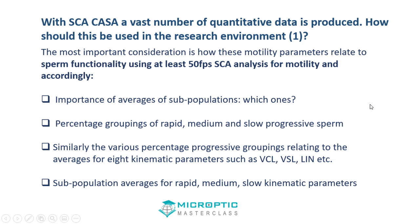We measure a vast number of quantitative data, and how should this be used in the research environment? The emphasis is on functionality. A lot of people say they've measured percentage motility or progressive motility, but what is really important is functionality. It's important to look at averages of subpopulations — percentage groupings, percentage progressive groupings relating to averages for kinematic parameters, and subpopulations for rapid, medium, and slow sperm including the kinematic parameters.